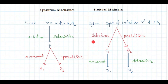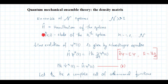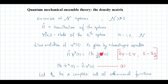Now I will discuss the density matrix — quantum mechanical ensemble theory. Consider an ensemble of N identical systems with N >> 1. Let the systems be characterized by a Hamiltonian Ĥ. All systems have the same Hamiltonian since they are identical. Let ψ_k represent the state of the k-th system in the ensemble, where k runs from 1 to N. The time evolution of ψ_k is given by the Schrödinger equation: Ĥψ = iħ ∂ψ/∂t, or equivalently iħψ̇ = Ĥψ.